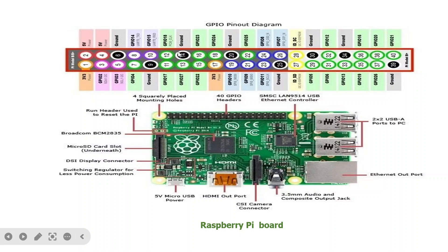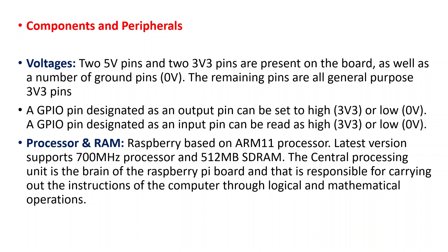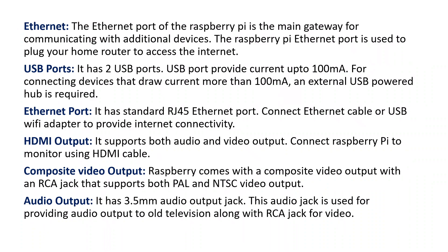The GPIO pinout diagram is given here. There are 40 pins in total, including two 5-volt pins, two 3-volt pins, and ground pins. High means 3 volts and low means 0 volts. The processor is an ARM 11 processor running at 700 MHz. Ethernet facility is also present and is the main gateway for communicating with additional devices.